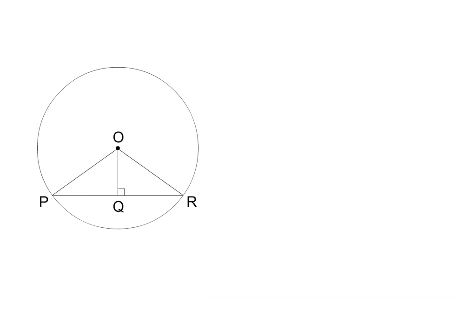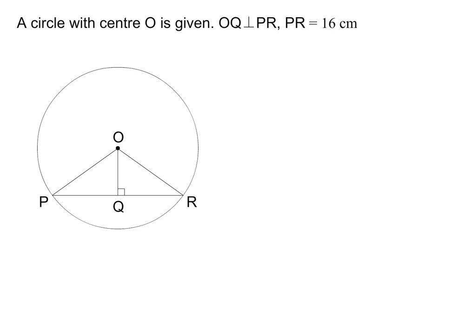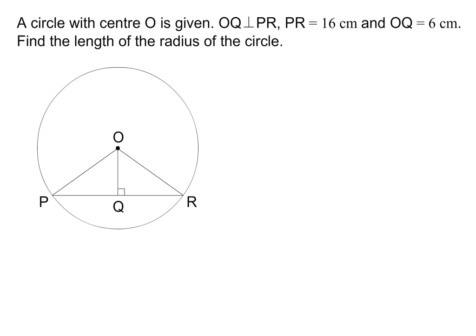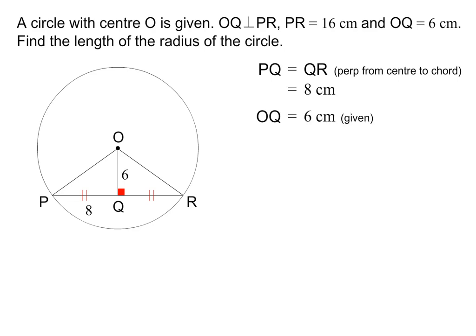Let's do some typical questions that are asked in this section. A circle with center O is given. OQ is perpendicular to PR. PR is equal to 16 cm and OQ is equal to 6 cm. Find the length of the radius of the circle. We are given that OQ is perpendicular to PR, so using Theorem 1, we can conclude that PQ must be equal to QR. PQ is therefore equal to 8 cm, which is half of 16 cm. We are given that OQ is equal to 6 cm. We can therefore use Pythagoras in triangle POQ to find the length of the radius.